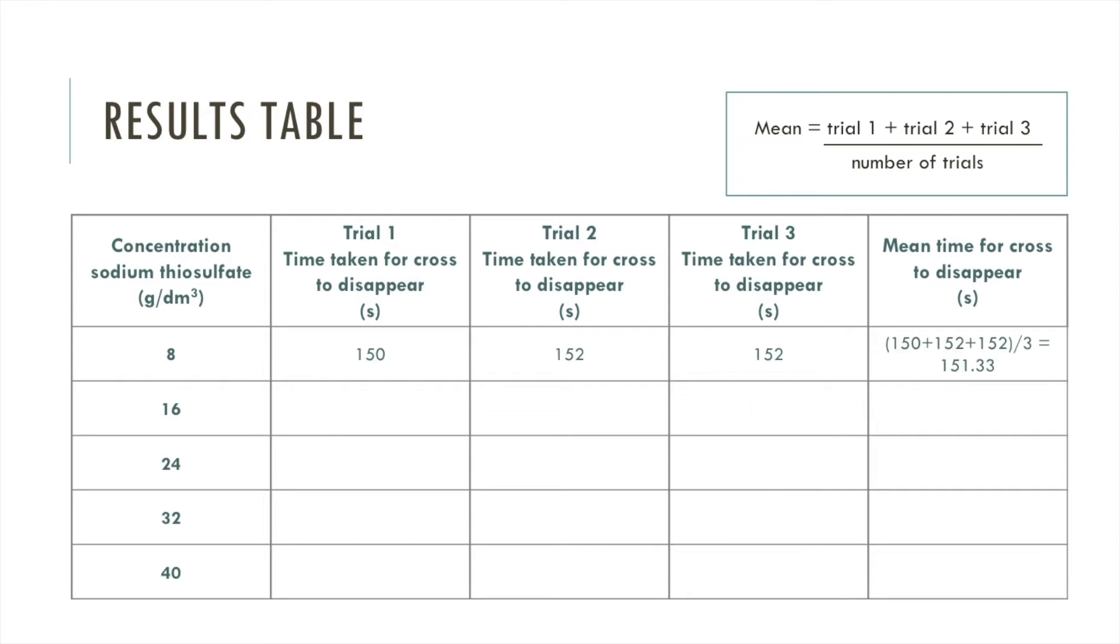For example, let's say for the 8 grams per decimetre cubed reaction, my results were 150, 152, and 152 seconds. To calculate the mean, you need to add together all of those trial values and then divide by 3 because there were 3 trials.